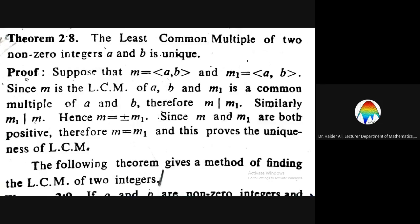Proof: Suppose that m equals LCM(a, b) and m1 equals LCM(a, b). Suppose that m is the LCM of a and b. We consider this as LCM, since m is the LCM of a and b.